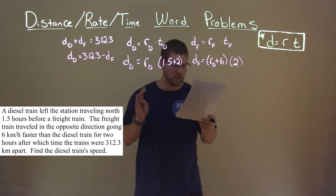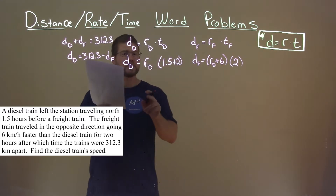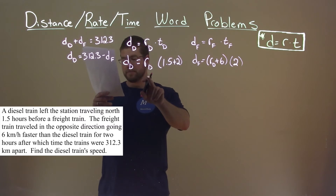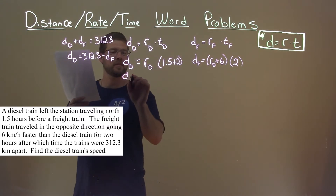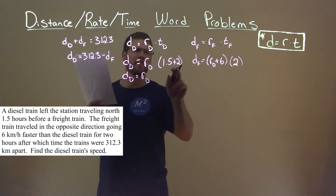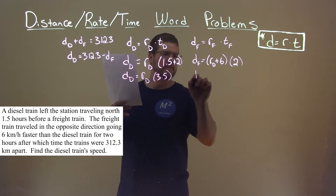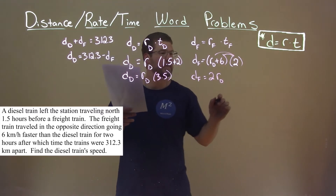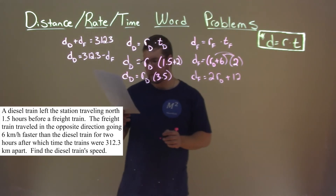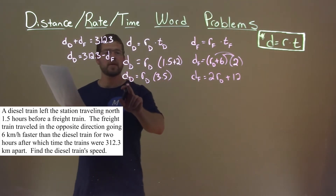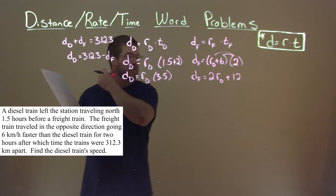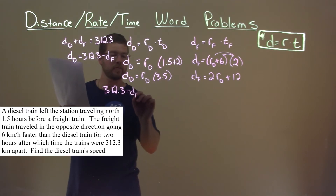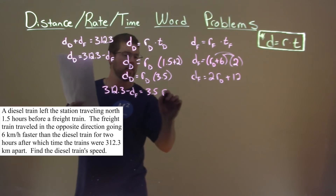Now we have all these different equations. Let's simplify. The distance of the diesel train is equal to the rate of the diesel train, and 1.5 plus 2 is 3.5. The distance of the freight train is equal to — distribute the 2 — 2 times the rate of the diesel train plus 2 times 6, which is 12. We know the distance of the diesel train is equal to 312.3 minus the distance of the freight train, so I'm going to replace that here and we have 312.3 minus the distance of the freight train is equal to 3.5 times the rate of the diesel train.